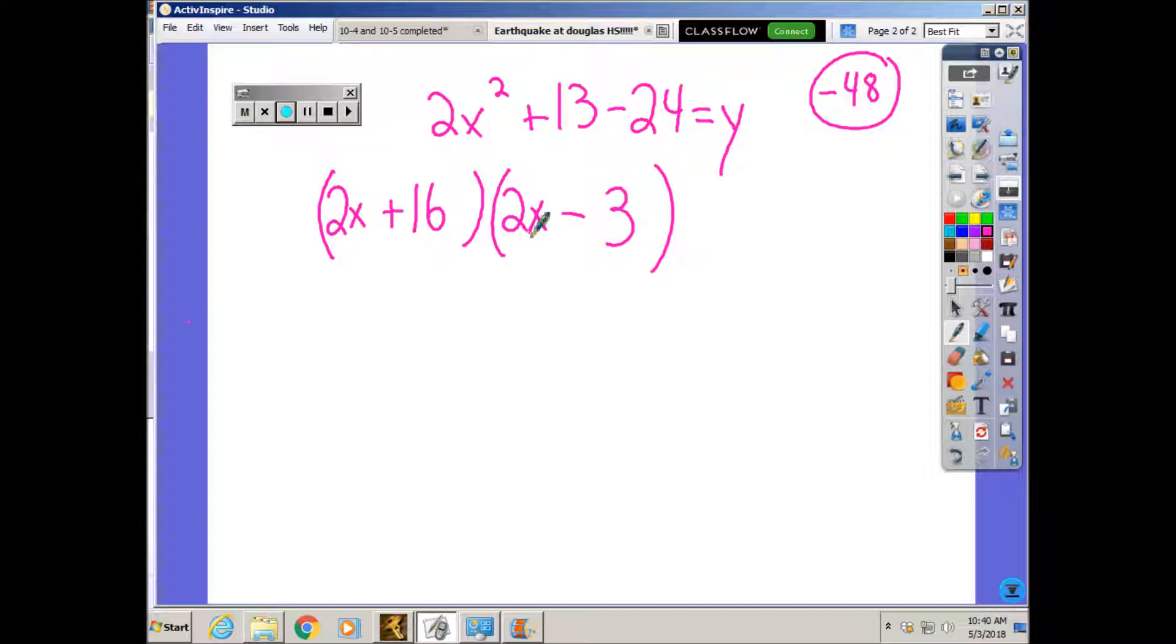So 2x plus 16 can be simplified. They're both divisible by 2 and I get x plus 8. And here I get 2x minus 3.